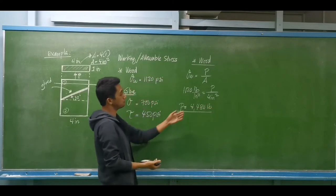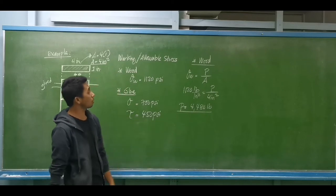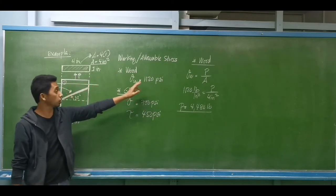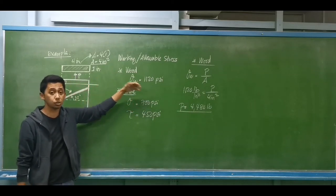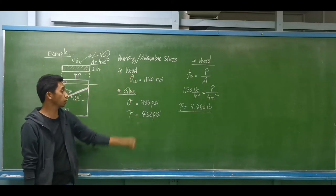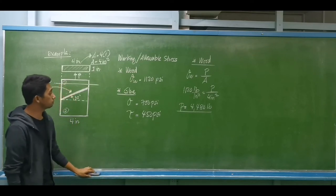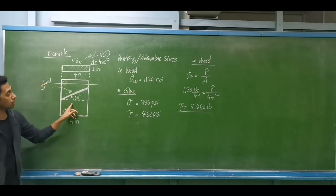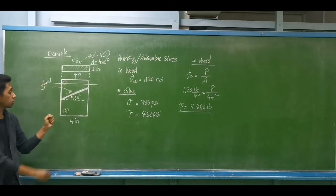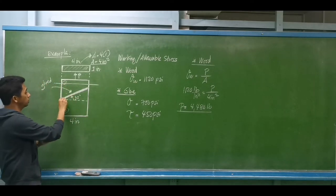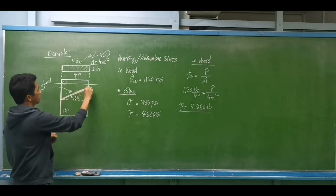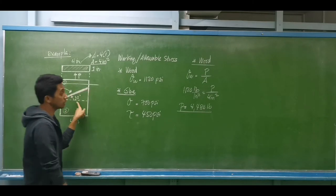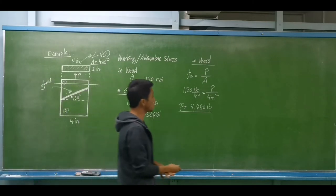That will be the value of P according to the normal working stress for the wood. Now, what about the glue portion? If we cut this inclined area, inclined at 30 degrees, we need to analyze the area under consideration.